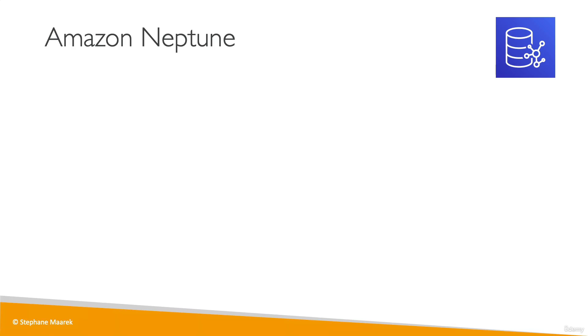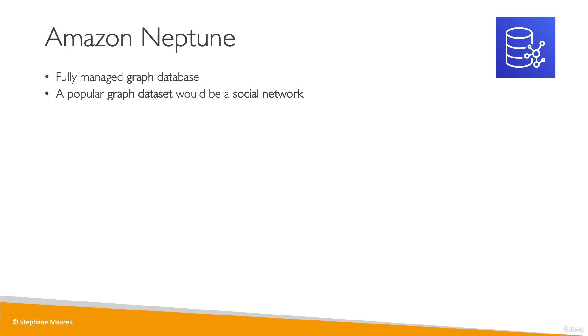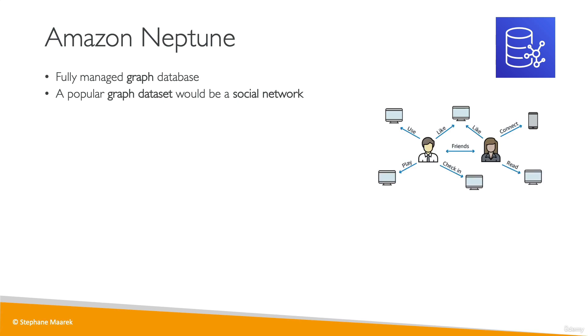Now let's talk about Amazon Neptune. Neptune is a fully managed graph database. An example of what a graph dataset would be is something we all know, which is a social network.